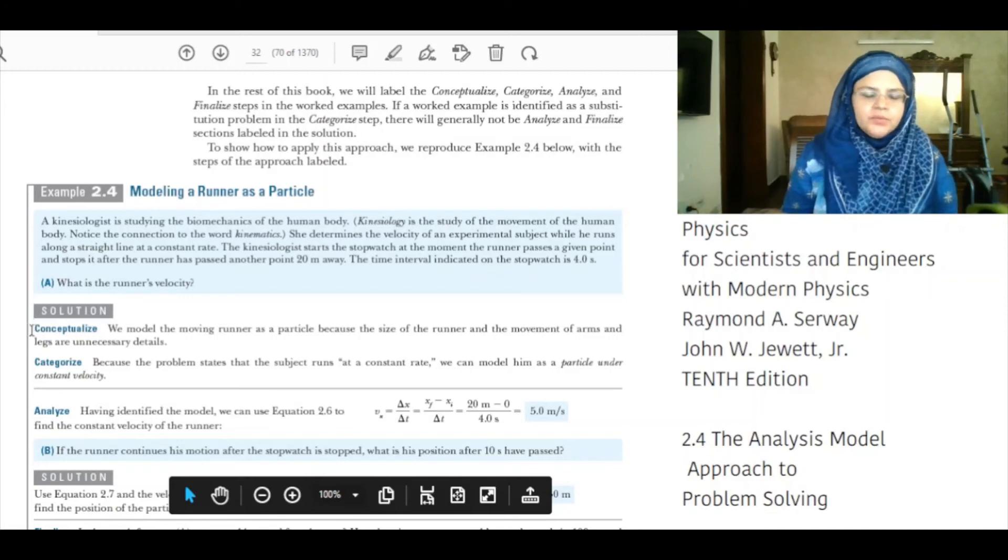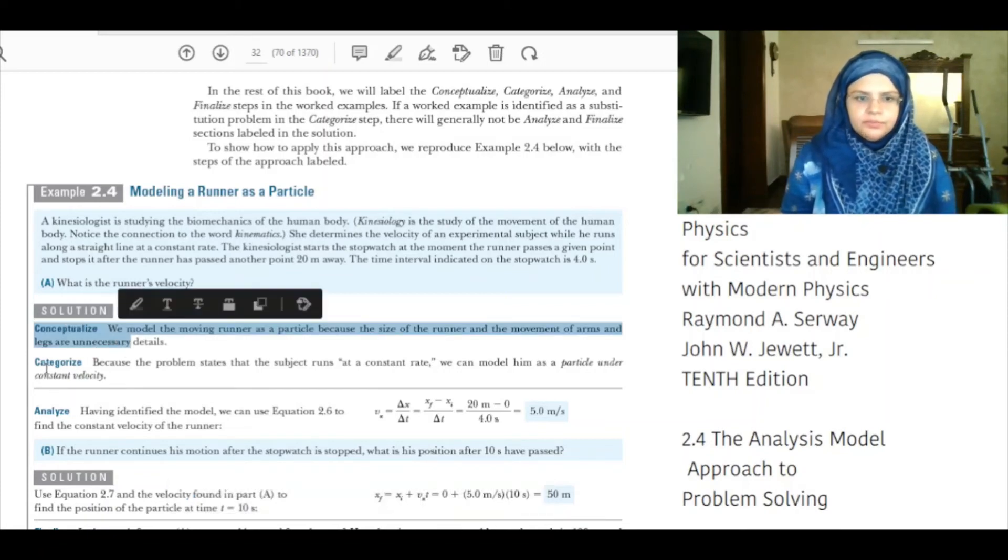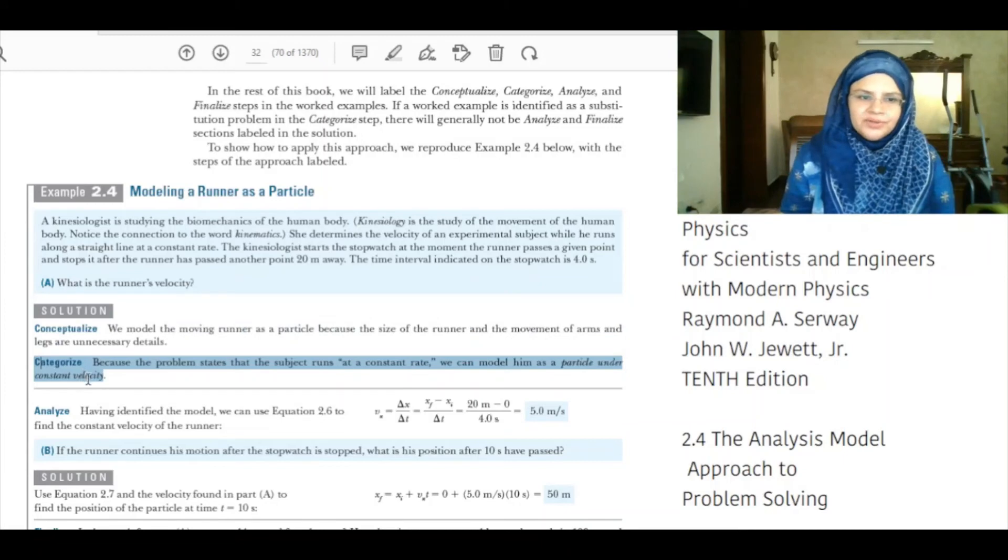Solution. Conceptualize: We model the runner as a particle because the size of the runner and the movement of the arms and legs are unnecessary details. Categorize: Because the problem states that the subject runs at a constant rate, we can model him as a particle under constant velocity.